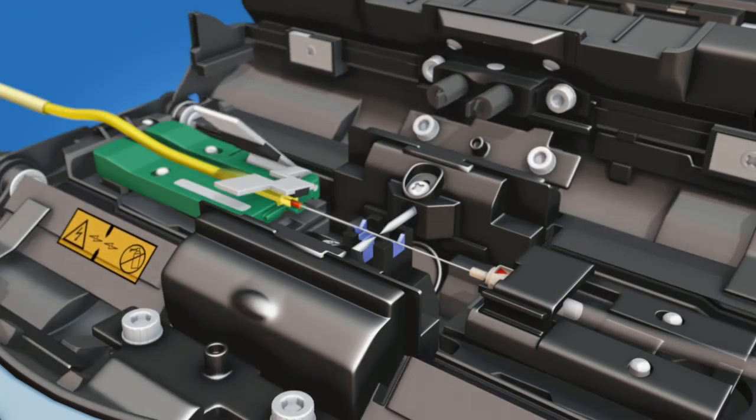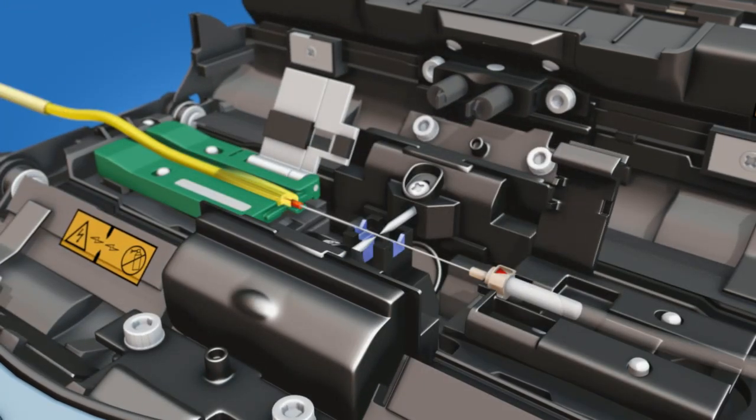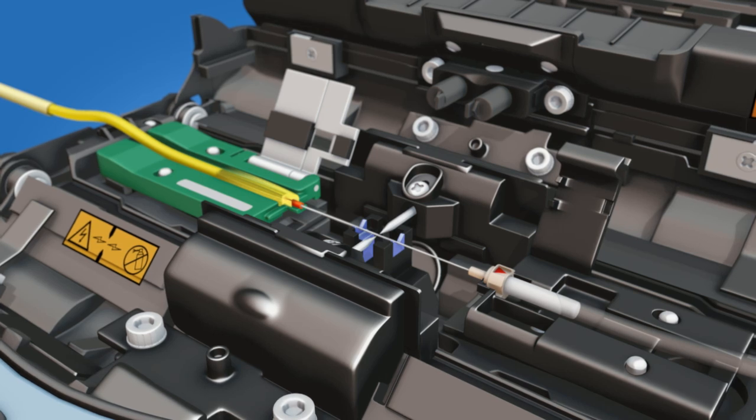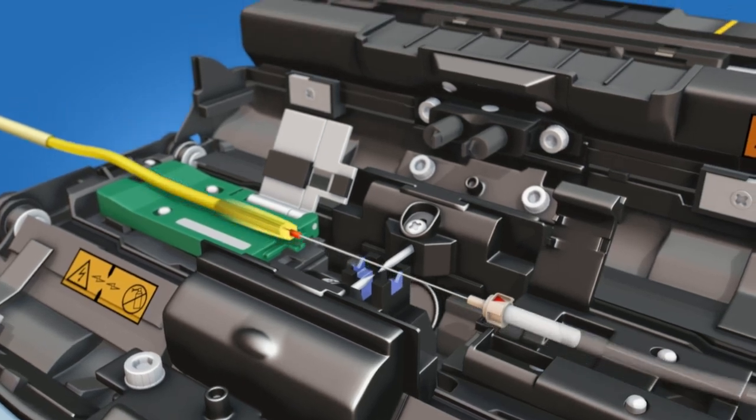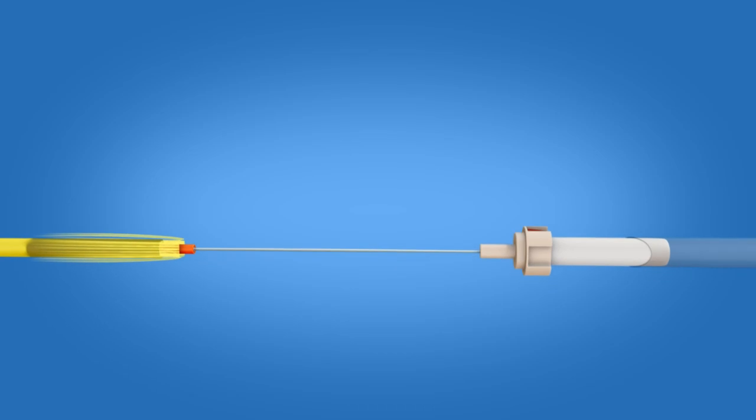Open the fiber holder and the ferrule unit holder clamps after the splicer has performed a tension test on the splice. Continue to keep tension on the splice while removing it from the fusion splicer.